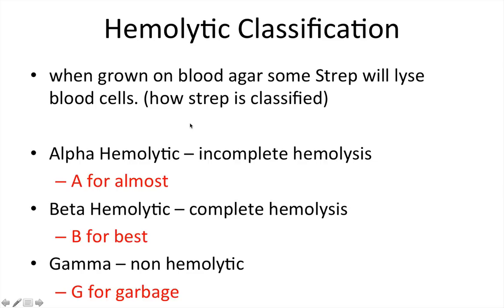An important concept is hemolytic classification. When grown on blood agar, some strep will lyse blood cells, and this is how strep is classified. Alpha hemolytic means incomplete hemolysis — think 'A for almost,' they almost break all the blood cells but not quite. Beta hemolytic means complete hemolysis — think 'B for best,' it's the best at breaking down blood cells. Gamma is non-hemolytic — think 'G for garbage,' because it doesn't break anything down.